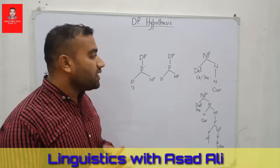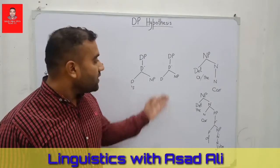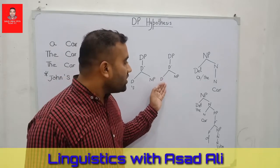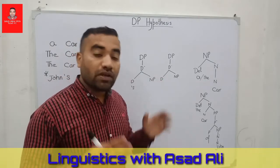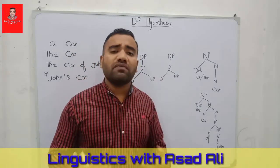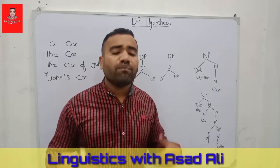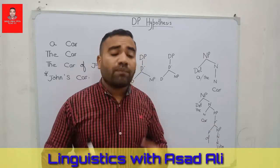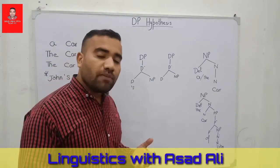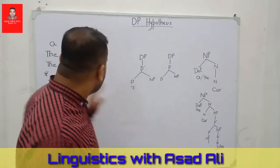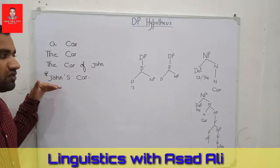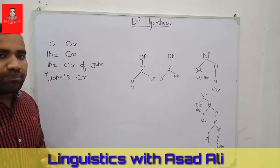If we consider this structure, we have D as a null head, because in English and even in other languages we have null constituents — null heads. If we want to draw the structure of this DP over this structure, it will look as follows.